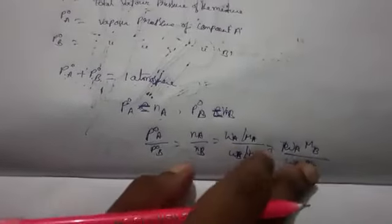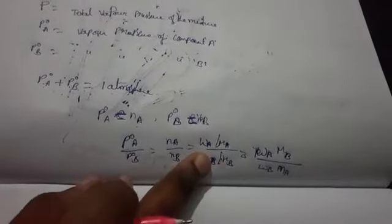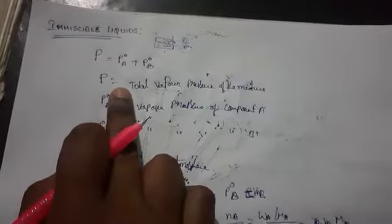This gives us the ratio of the weights of two components in the vapor phase at the boiling point. The ratio of the weights of two liquids distilled is directly proportional to their molar masses. So to summarize: immiscible liquids are liquids which do not mix with each other.